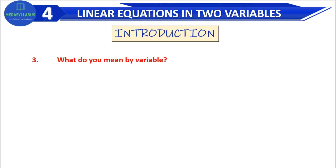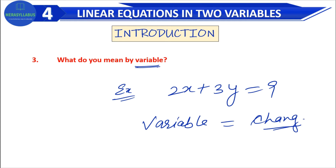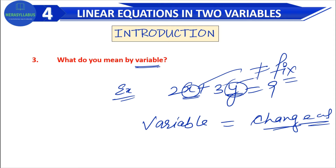Now comes variable. When I taught you linear equation in one variable, I explained this too. For example, consider the equation 2x plus 3y is equal to 9 — a random equation. Here, variable means the value that will change — that means its value is not fixed, it is changeable. So x and y here are variables because their values are not fixed.